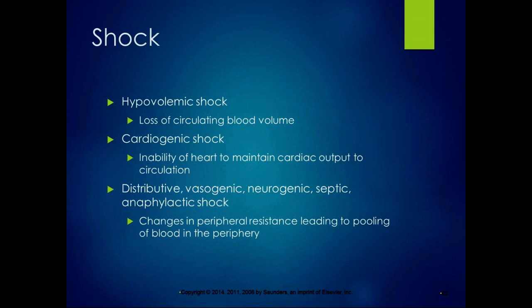Shock — basically, there are lots of different types. The definition of shock is inadequate perfusion of oxygenated blood. Hypovolemic shock is caused by blood loss — loss of circulating blood volume. For example, an aortic aneurysm could cause hypovolemic shock because you're bleeding into internal compartments and losing blood volume. Cardiogenic shock is caused when the heart cannot maintain enough cardiac output to supply the circulation.